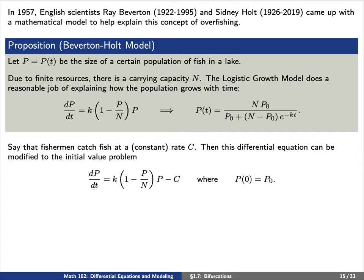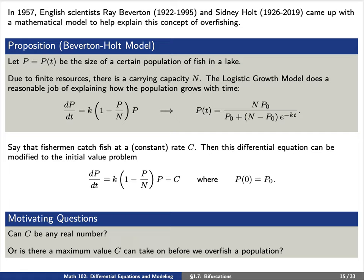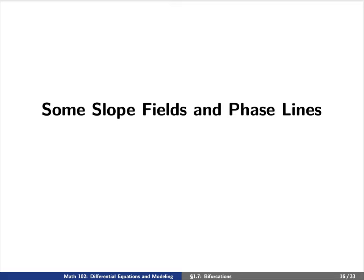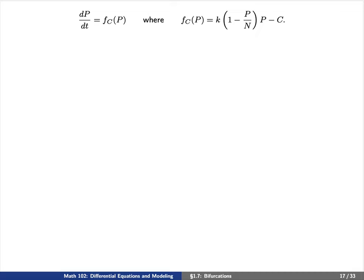We have the following two motivating questions. First, can C be any real number? Or, second, is there a maximum value of C that we can take on before we overfish a population? To get some ideas behind what this means, let's take a look at some slope fields and some phase lines. Let's go back to this modified differential equation — essentially the logistic growth model, but now subtracting a constant rate C.